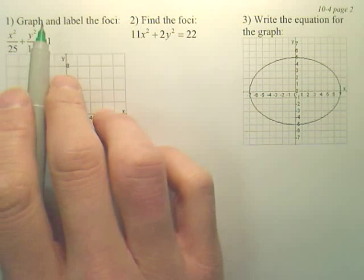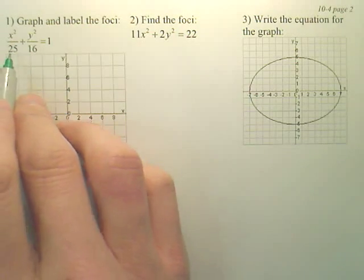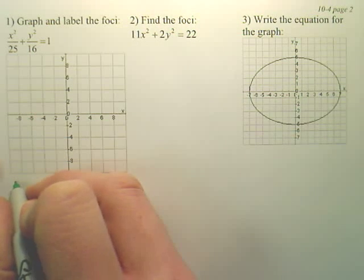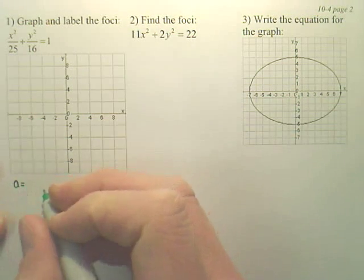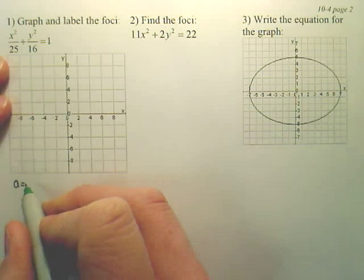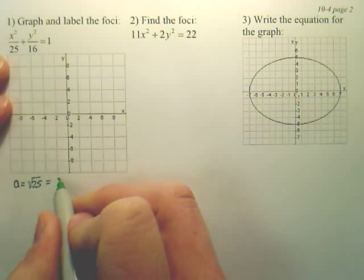If I want to graph and label this equation, it's an ellipse. What you have to pay attention to is what's a squared, what's b squared. What you should notice is a is going to be the square root of the biggest denominator. So the biggest denominator is 25, so a is going to be the square root of 25, so a will be 5.